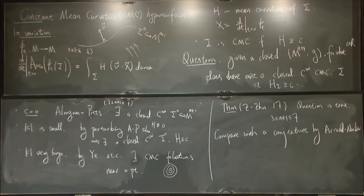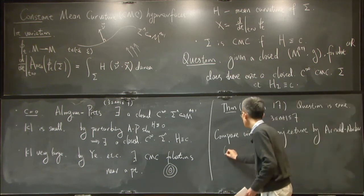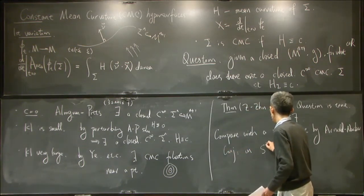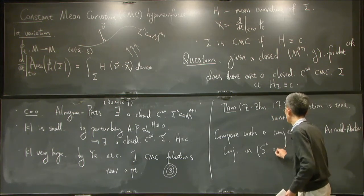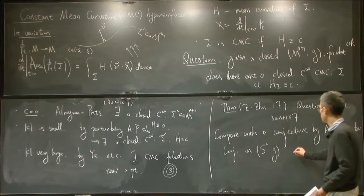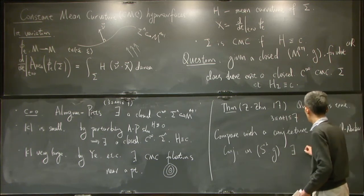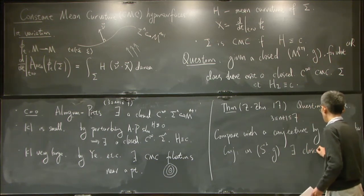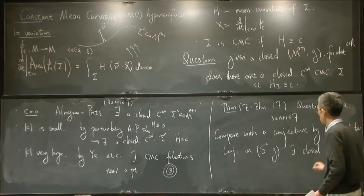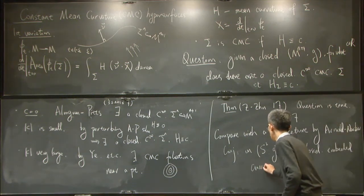So what they conjecture is that, given topological S2, so this is a topological 2-sphere, with arbitrary Riemann metric, they conjecture the existence of a closed embedded curve.